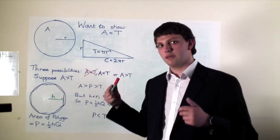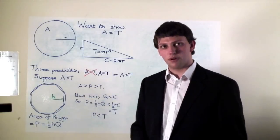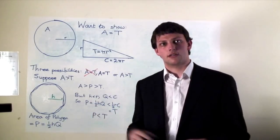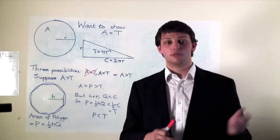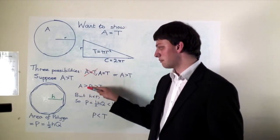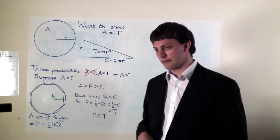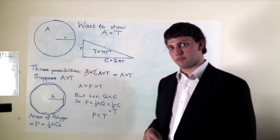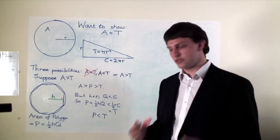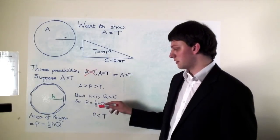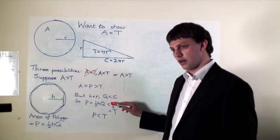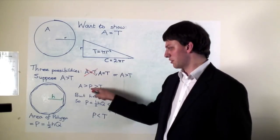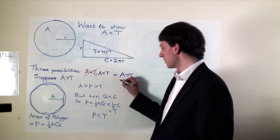What about the circle being bigger than the triangle? This time we inscribe polygons within the circle, and again as we increase the number of edges, the polygon's area gets closer to that of the circle, until we get a polygon whose area sits between the circle's area and the triangle's: so triangle area < polygon area < circle area. But now the height h of the inscribed polygon is smaller than the circle's radius r, and the perimeter q is smaller than the circle's circumference c. So the polygon's area — half times h times q — is smaller than half times r times c, which is the triangle's area. So the polygon is smaller than the triangle, but it was supposed to be bigger. So the circle can't be bigger than the triangle either.